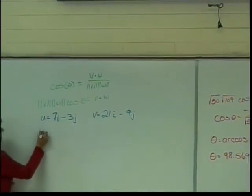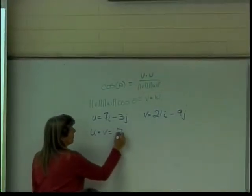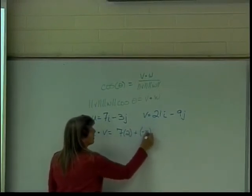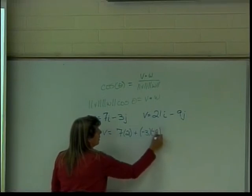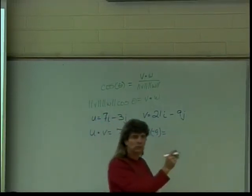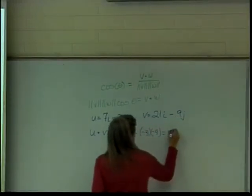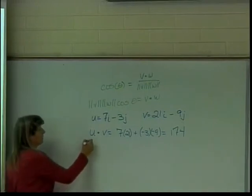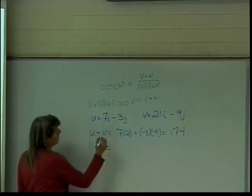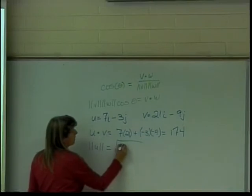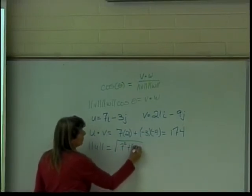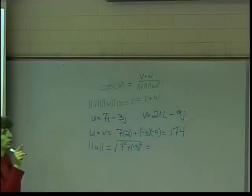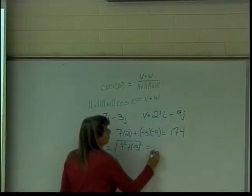So let's calculate dot product. U dot V is going to give us seven times twenty-one plus negative three times negative nine which is one seventy-four. Obviously, they're not orthogonal. So now let's take the magnitude of U. It's going to be the square root of seven squared plus negative three squared which will be forty-nine plus nine which is fifty-eight under the square root symbol.